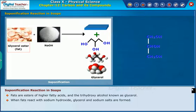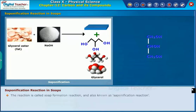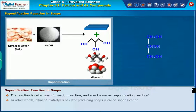When fats react with sodium hydroxide, glycerol and sodium salts are formed. These sodium salts of the higher fatty acids are soaps. The reaction is called soap formation reaction, also known as saponification reaction. In other words, alkaline hydrolysis of an ester producing soaps is called saponification.